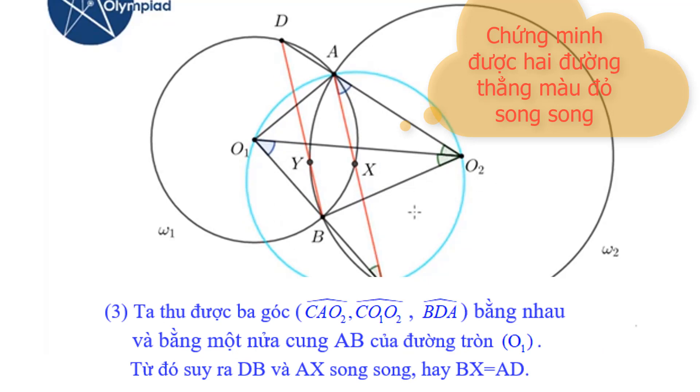And like these three angles, this angle is equal to this angle and to this angle. And all of them equal to half of arc AB in circle Omega 1. This proves that AX is parallel to DY. And so these two arcs in circle Omega 1 are equal. So BX is equal to AD.